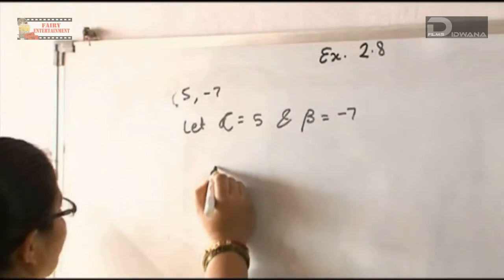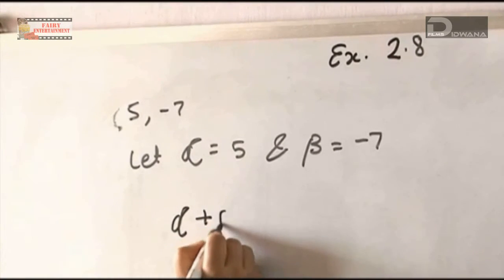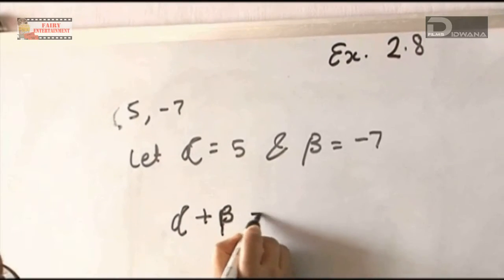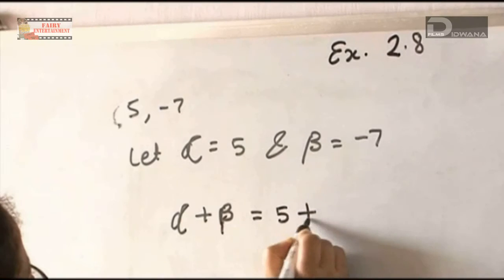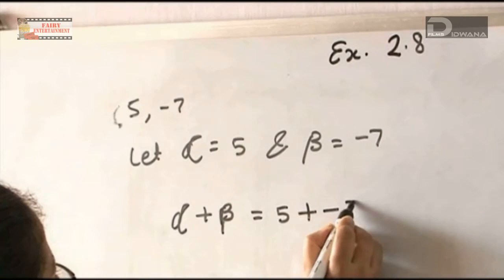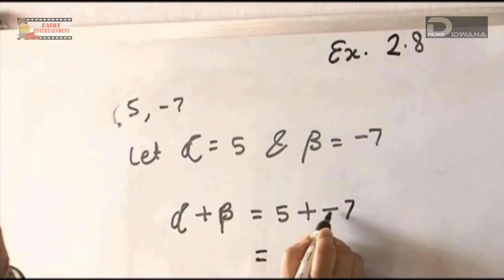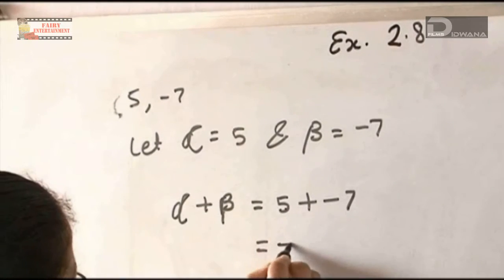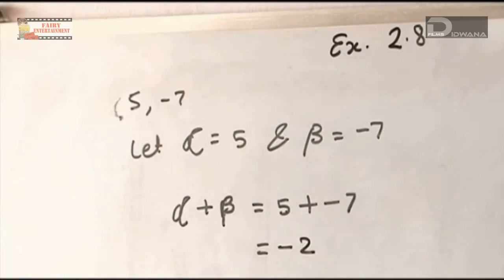α + β equals: the value of α is 5 and β is -7. So, 5 + (-7), the answer is -2.